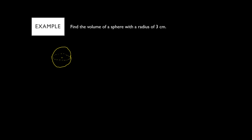The radius is 3 centimeters. The volume of a sphere is four-thirds pi r cubed. So we have four-thirds times pi times 3 cubed. Three cubed is 27, so this is four-thirds times pi times 27. We can simplify: 27 divided by 3 is 9, and 4 times 9 is 36. So this simplifies to 36 pi.